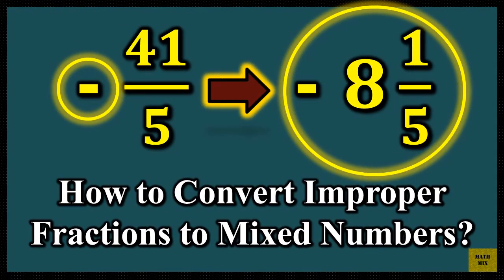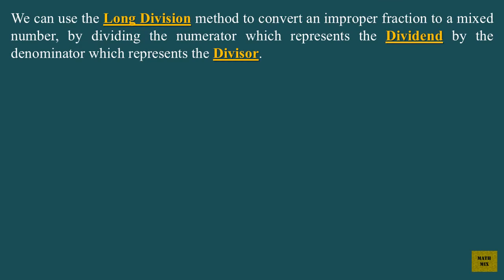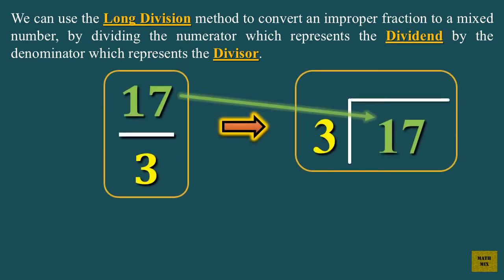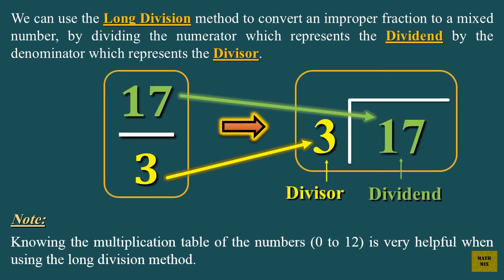How to convert improper fractions to mixed numbers? We can use the long division method to convert an improper fraction to a mixed number by dividing the numerator, which represents the dividend, by the denominator, which represents the divisor. Knowing the multiplication table of the numbers 0 to 12 is very helpful when using the long division method.